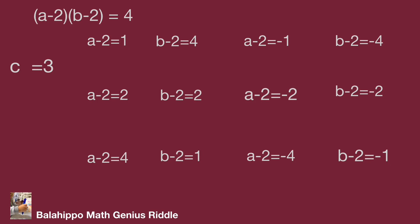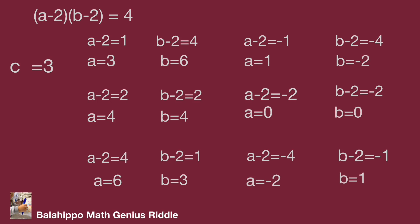From the factor pairs we get A equals 3 and B equals 6, A equals 4 and B equals 4, and A equals 6 and B equals 3. Since A, B, C must be positive integers, we remove groups where values are negative or zero. Furthermore, since A not equal to B not equal to C, we remove A equals 4, B equals 4, C equals 3 (repeated values), and A equals 3, B equals 3. So there is no group for C equals 3 that meets all requirements.